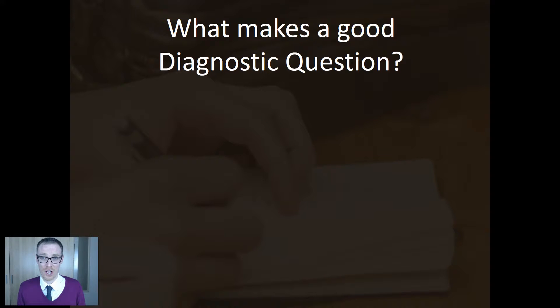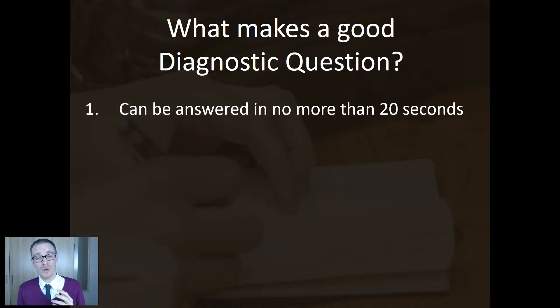So here we go, these are Mr. Barton's four golden rules. Number one, they can be answered in no more than 20 seconds. Now, the reason I've chosen that is because I think if a child's thinking for much more than 20 seconds, almost by definition, they're making multiple leaps in their thinking. And as soon as they start to make multiple leaps or multiple steps, it's very hard to pin down where the specific misconception lies.